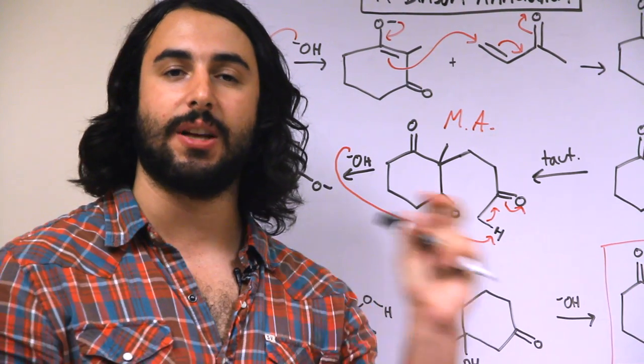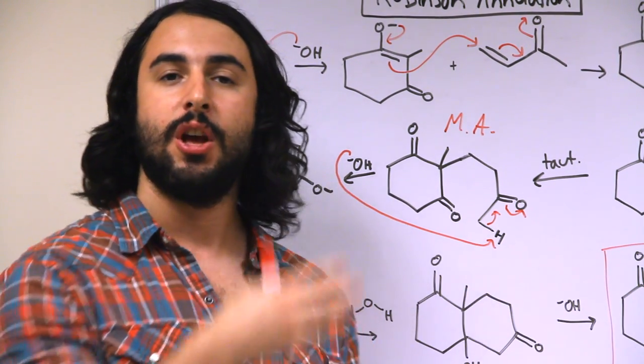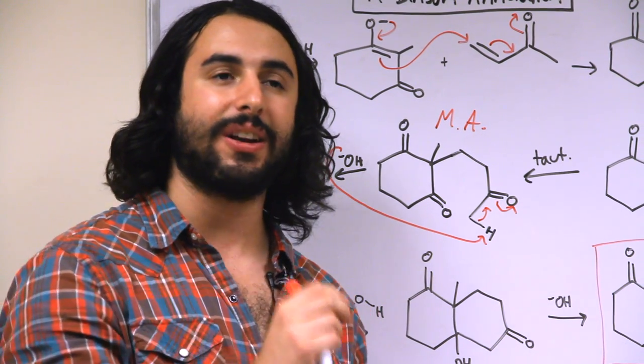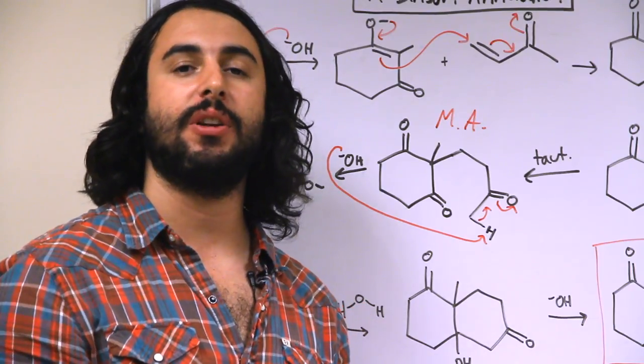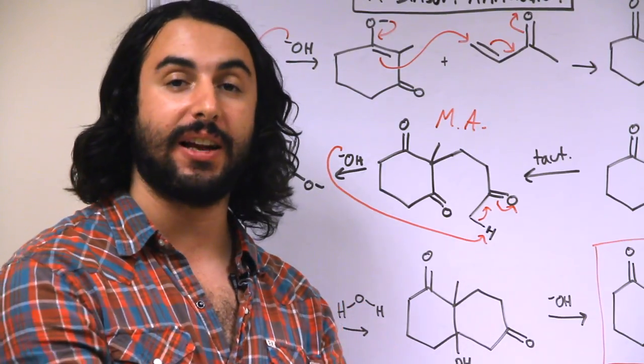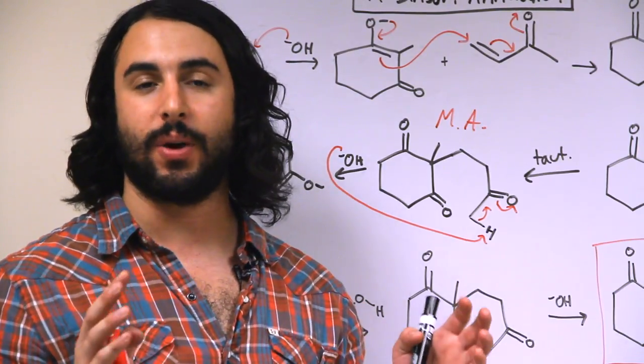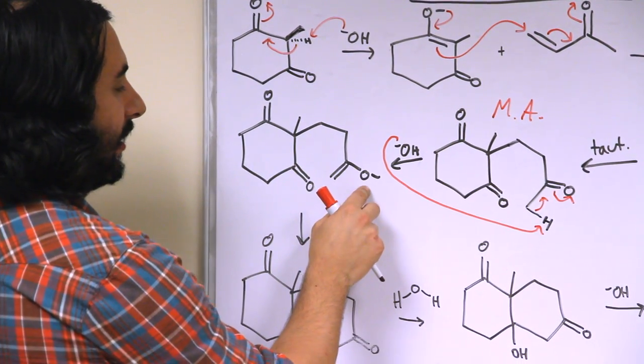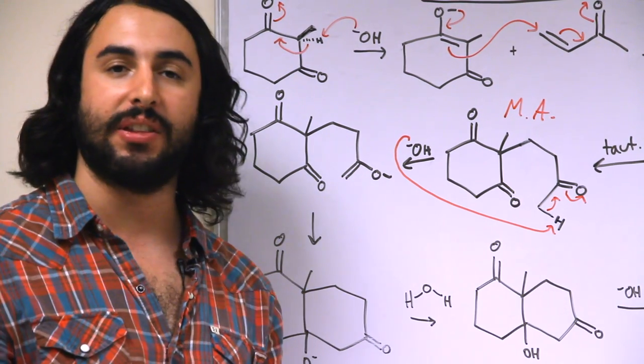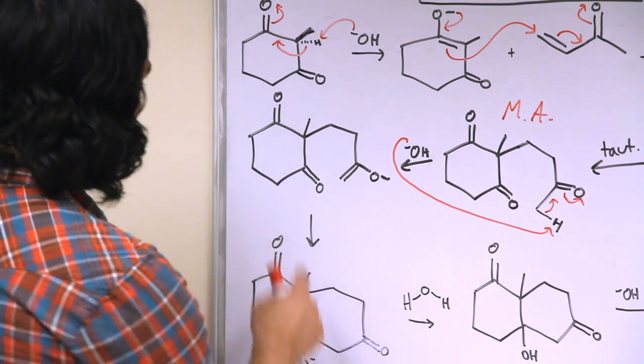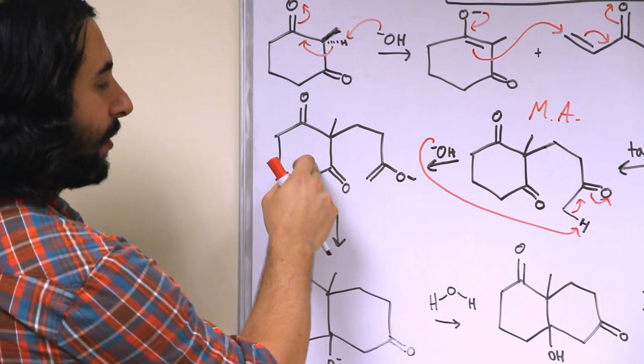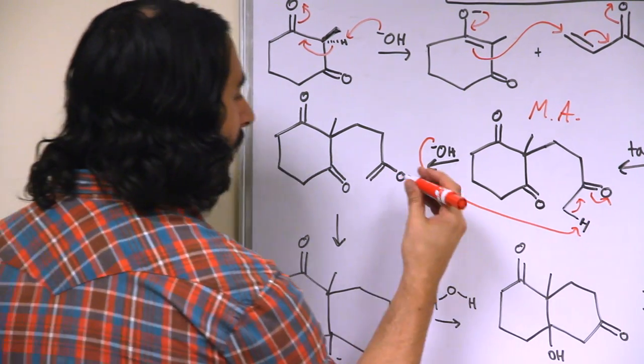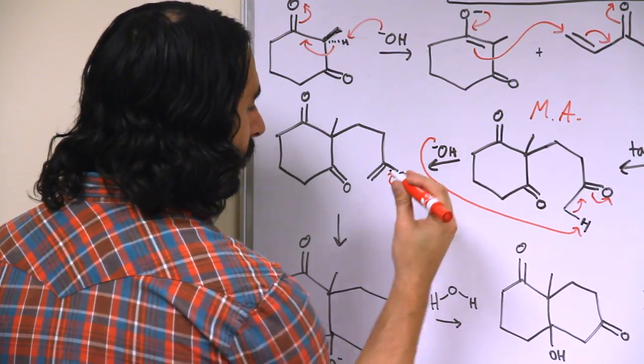Because what we're going to do now is something pretty interesting. Whereas in solution a substrate typically has to swim around to find something to interact with, here we have a much more kinetically favorable situation. We have the opportunity to do an intramolecular reaction. That is when a molecule reacts with itself. Because this enolate sees something that it can react with in its immediate vicinity.